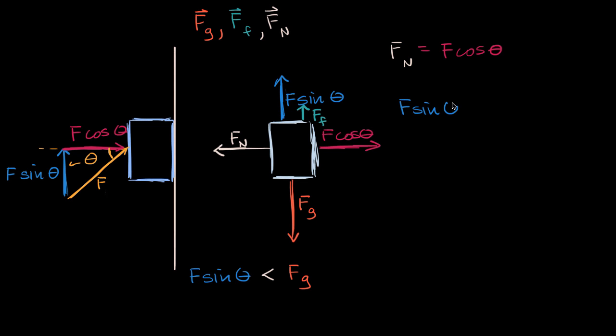And we could also say that F sine theta plus the magnitude of the force of friction, that these would completely counteract the magnitude of the force of gravity, because it's going in the opposite direction. So these would be equal to F sub G. And so once you set up equations like this, if you know all but one of these variables, you can figure out the other ones, which is very useful in physics.